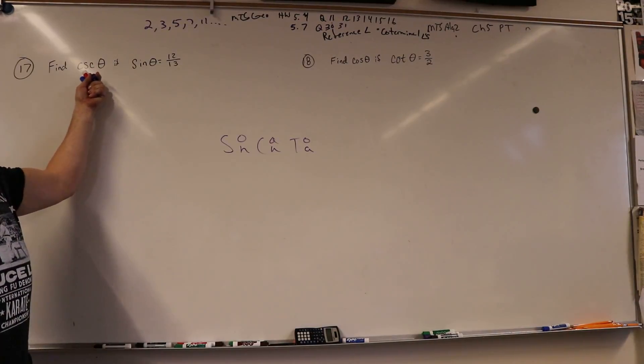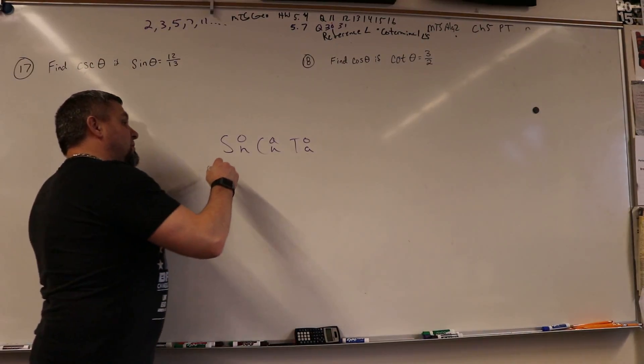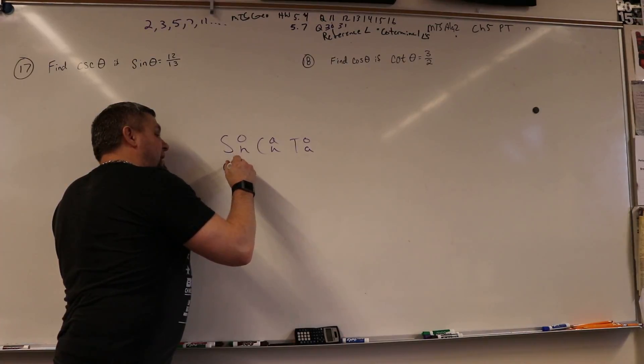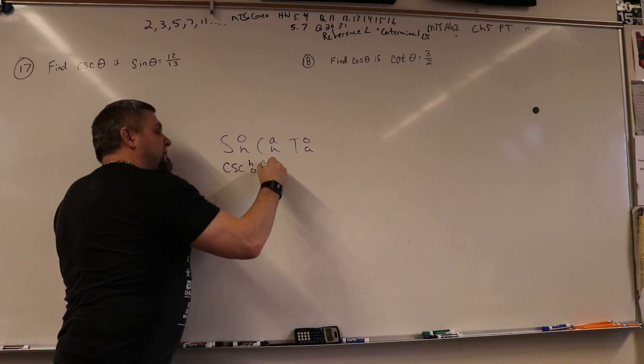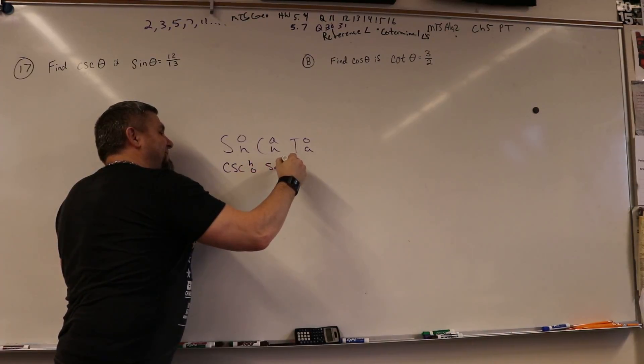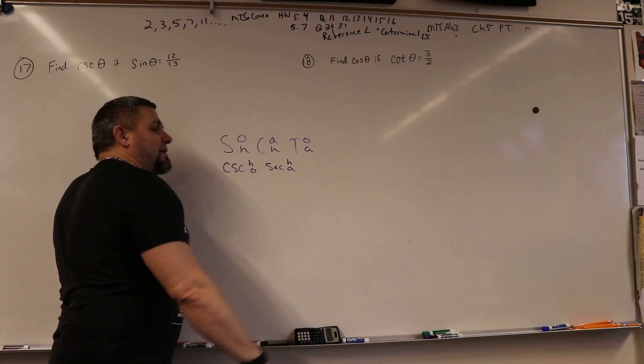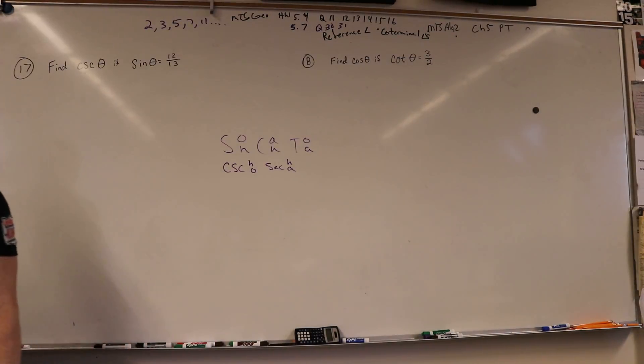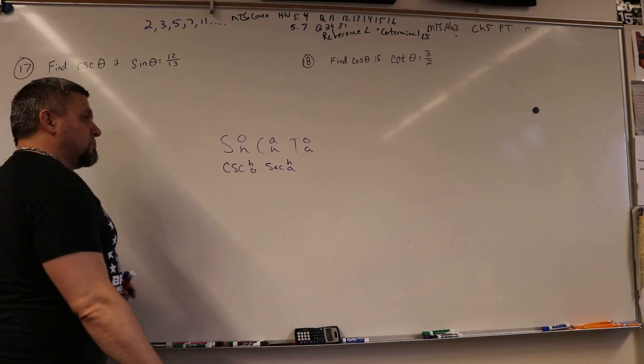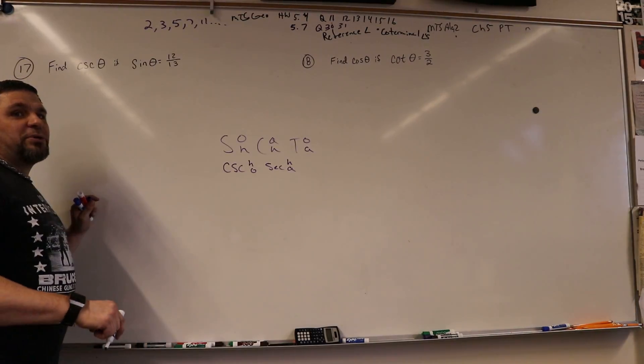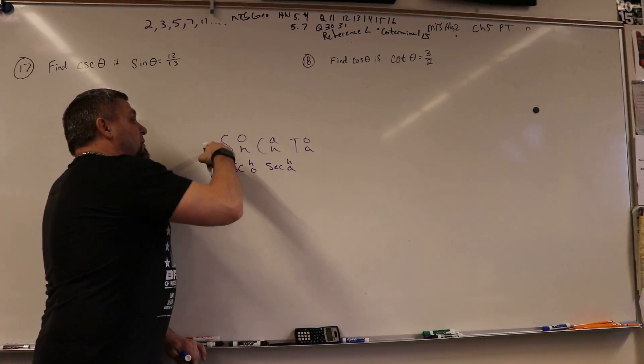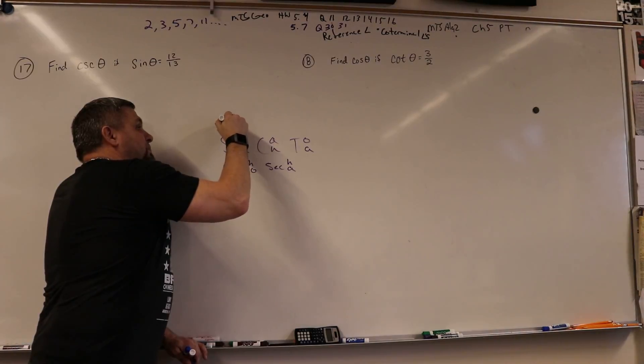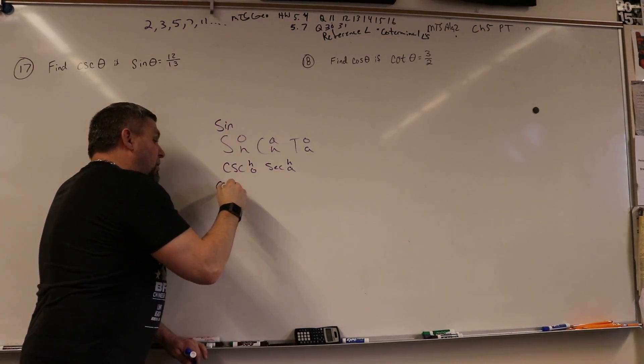We need cosecant. Cosecant is hypotenuse over opposite, because secant can't be hypotenuse over opposite. Secant's adjacent over hypotenuse. So she's a hawk. How do you know which one's co or secant? That's the whole co, no co, right? So this one's sine, right. This is cosecant, right.